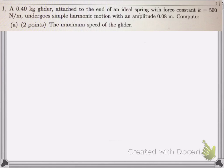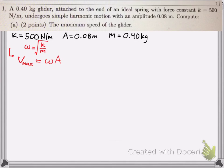So if you want to compute the maximum speed of the glider, there's a couple ways you can do it. Let's start off with energy, but let's write down the given information. So we have k, we have A, and we have m. So omega, which is the angular frequency, can be written as the square root of k over m. And the v max is omega times amplitude.